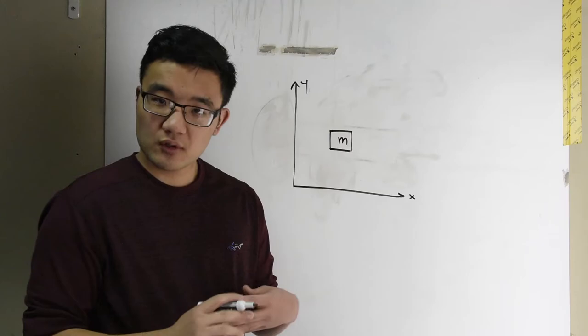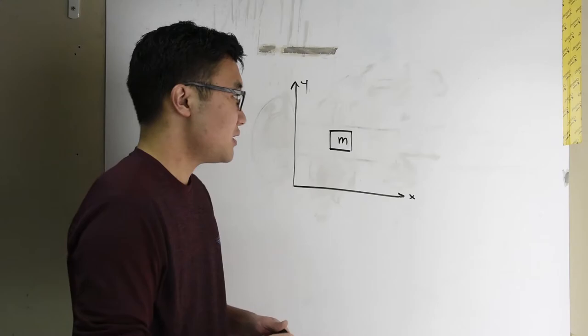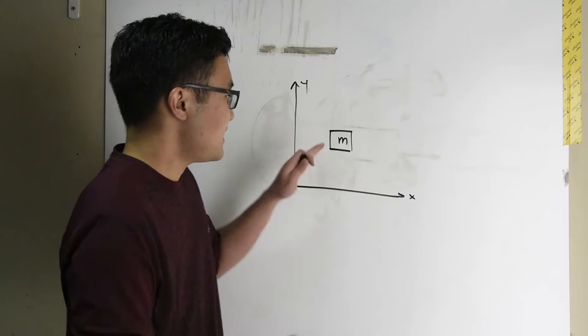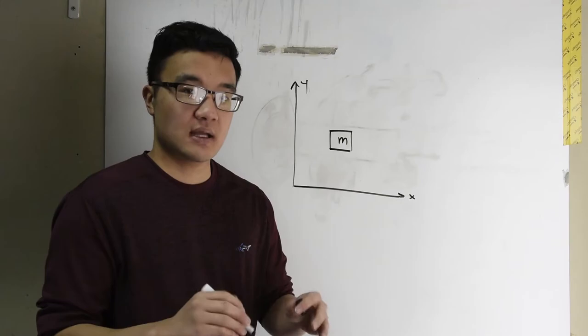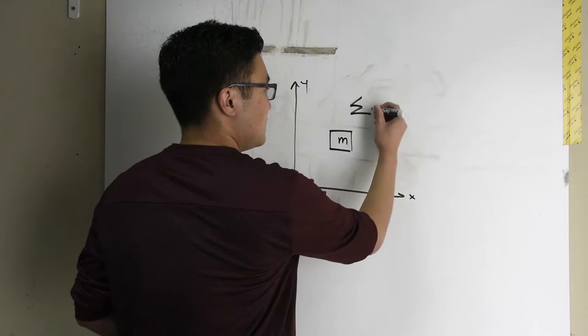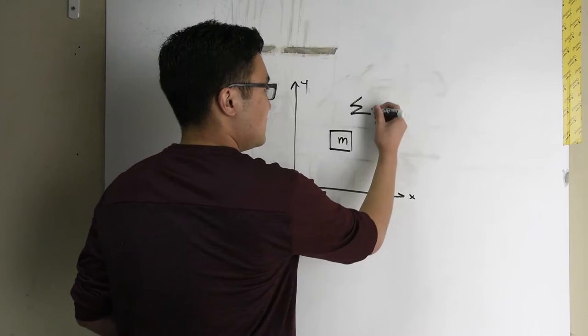And what we're going to be able to say is we know that in order for something to move, there has to be a net acceleration, right? So if we're looking at static equilibrium, what we're saying is this mass here is static. It is not moving. It has no net acceleration. Therefore, the sum of the forces acting on this mass have to equal zero, right?